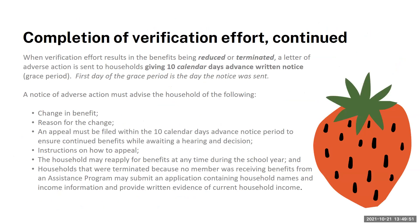If benefits are being reduced or terminated, a letter of adverse action is sent to the households giving 10 calendar days advance written notice. You can find the templates for the letters on our website.